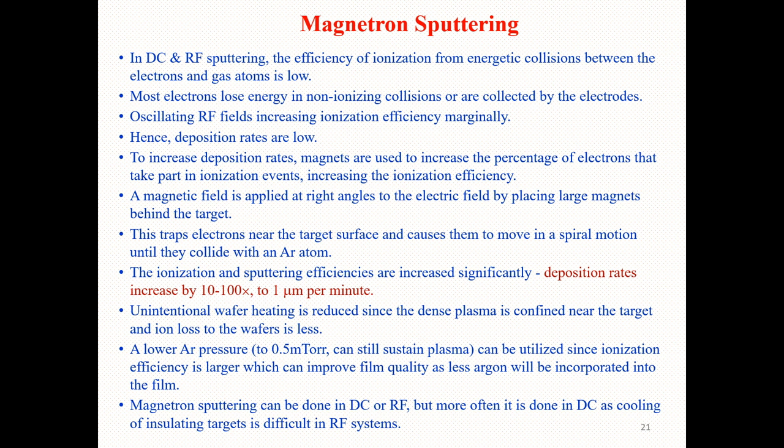It should be noted that magnetron sputtering can be done in both DC and RF modes, but more often it is done in DC. This is because cooling of the insulating target is difficult in an RF system, so we prefer to operate in DC mode.